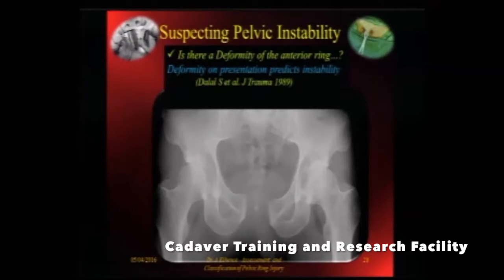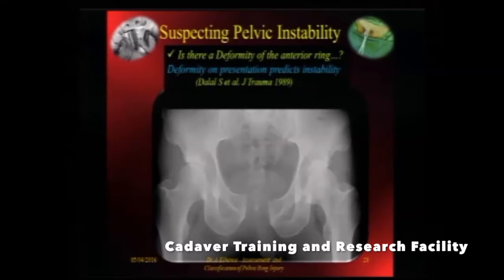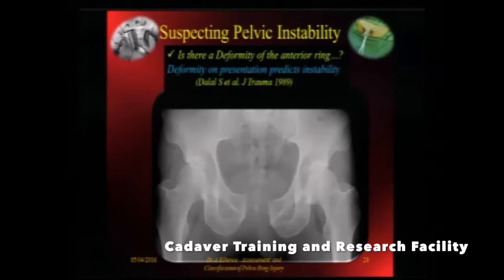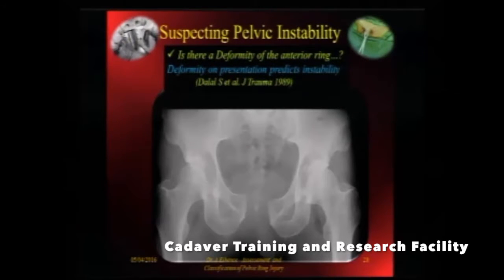When suspecting ring instability, check for deformity of the anterior ring — less than 2.5 cm is usually not going to cause a lot of instability, but once it goes beyond 2.5 cm, start thinking about whether something is happening posteriorly at the level of the brim, the SI joint, or the sacrum. A deformity on presentation is a predictor of instability. Follow the rules: see the ilioinguinal line, the ilioscale line, the obturator ring, the pelvic brim, the arcuate line, and the sacroiliac joint — every single time, make it a habit.